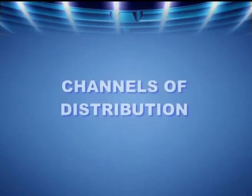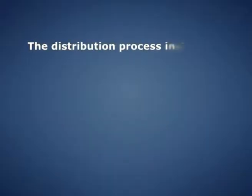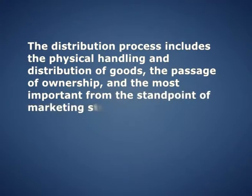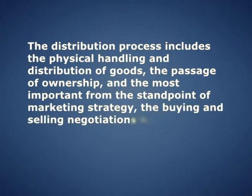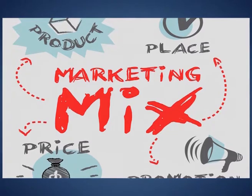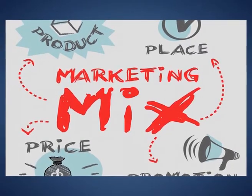Let's start with understanding the first part of our topic. The route through which the goods move from producer to buyer is called the channel of distribution. The distribution process includes the physical handling and distribution of goods, the passage of ownership, and the most important from the standpoint of marketing strategy — the buying and selling negotiation between middlemen, producers and consumers. To complete the marketing mix and get the product to the target market, channels of distribution must be developed.